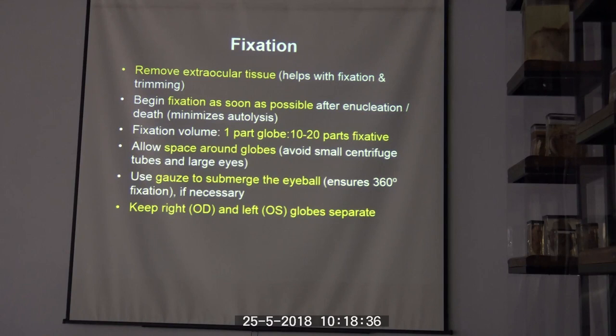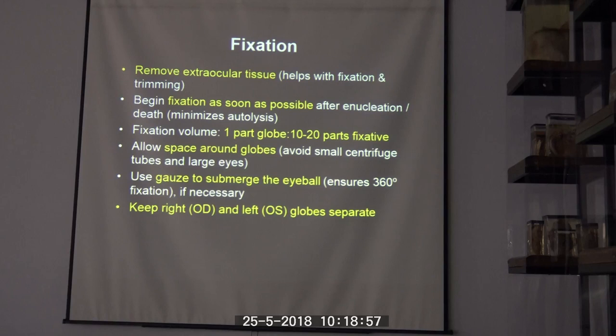For fixation, just like other tissues, the ideal ratio is 1 to 10, and some say even 1 to 20. Make sure you don't place the globe in a container with many other tissues where fixative cannot reach it. If needed, use gauze or paper towel to ensure the globe is fully covered with fixative.